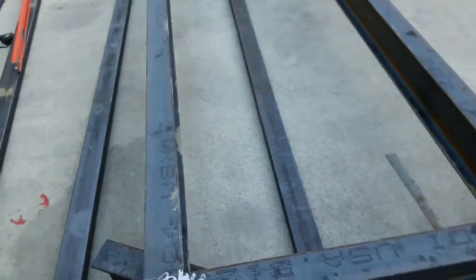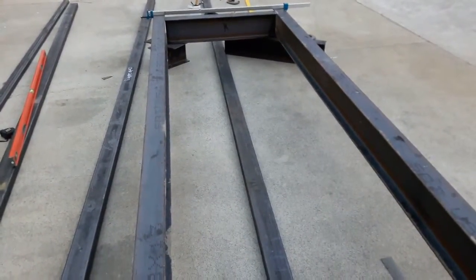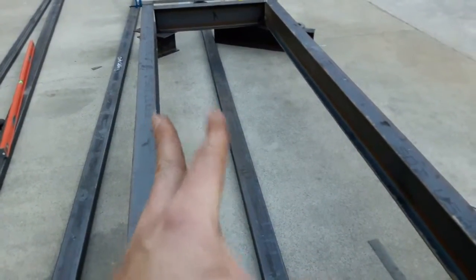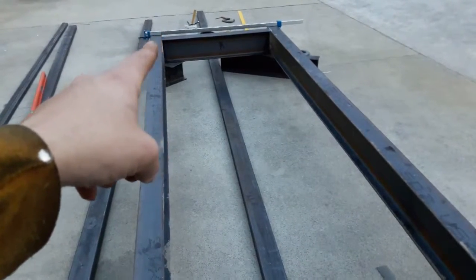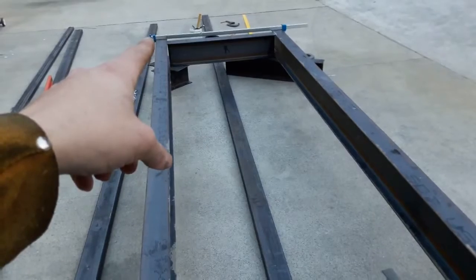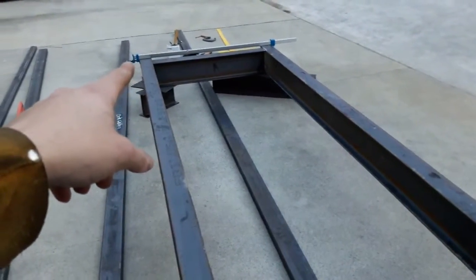And then do the diagonal measurements. And then the next thing I'll probably do is, if it's a parallelogram and not right angles everywhere, then I will take like a ratcheting strap.